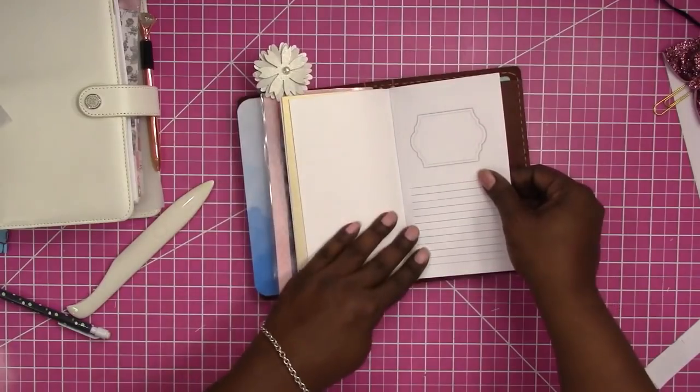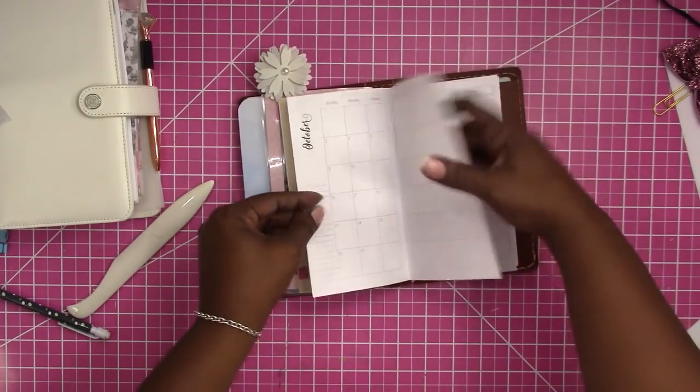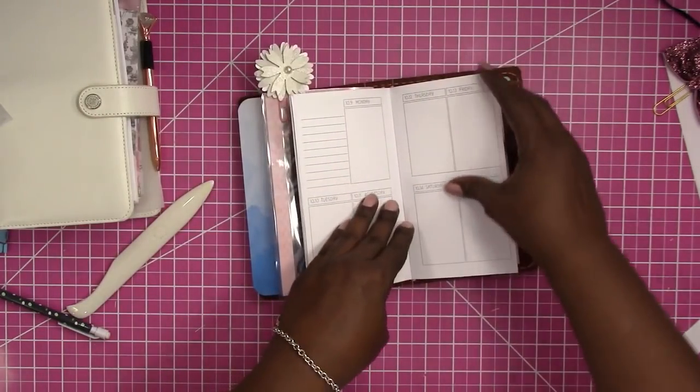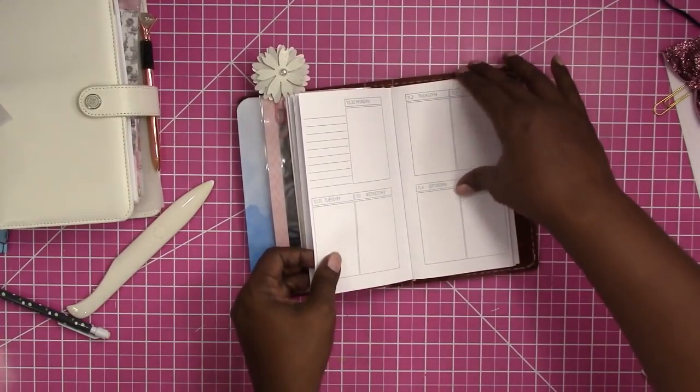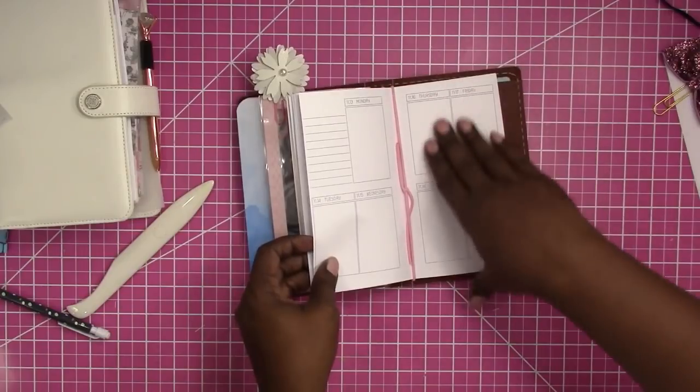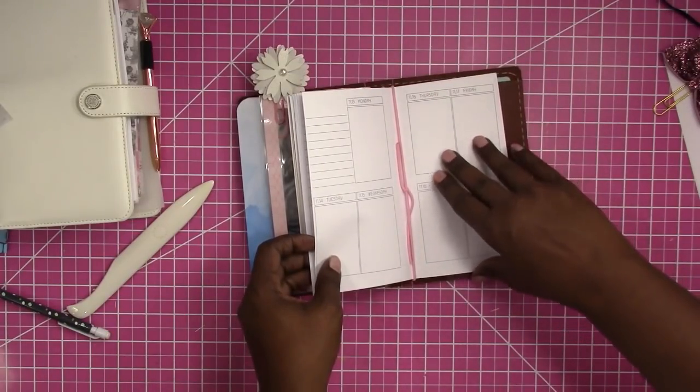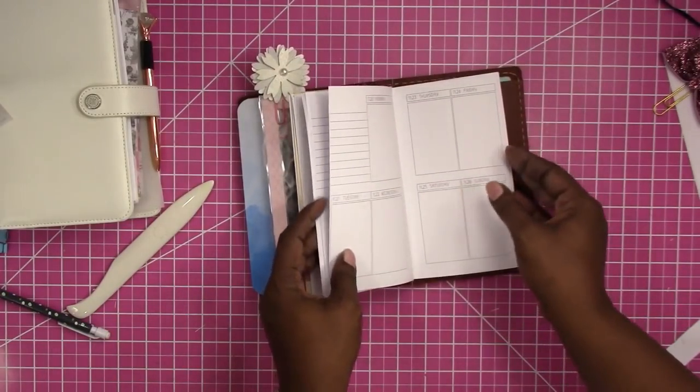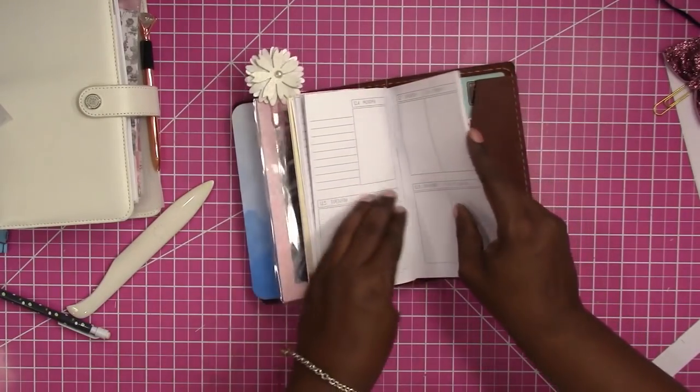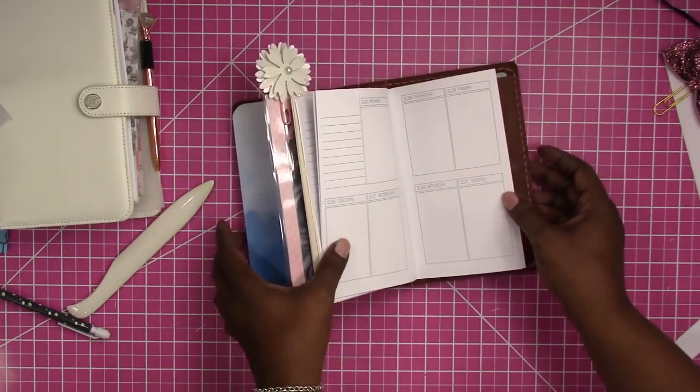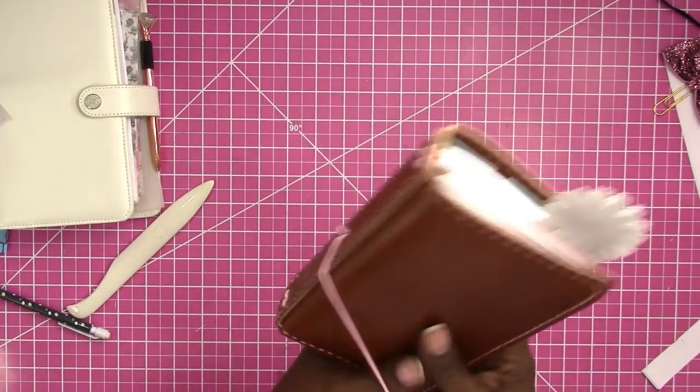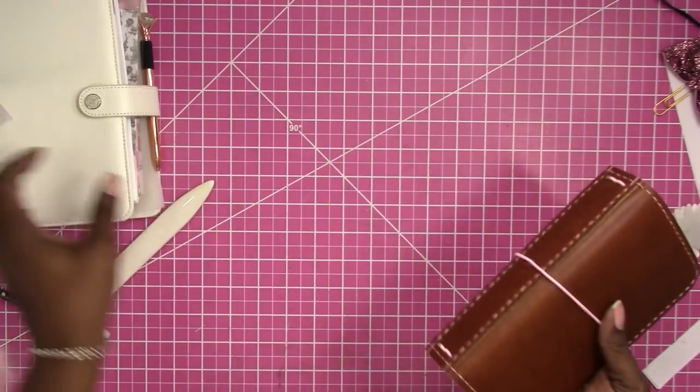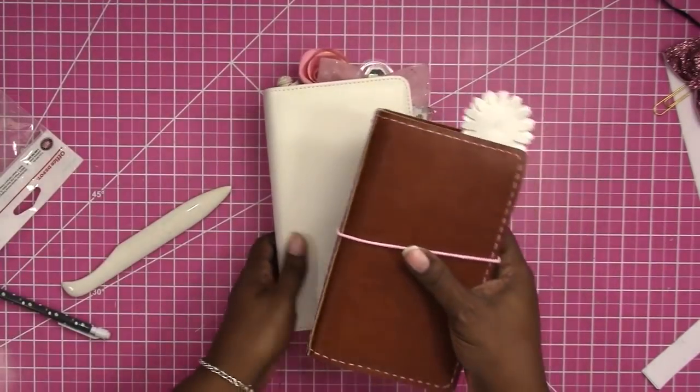And it is exactly the same as the insert in the binder. Same size, same insert. So that's how you would do it. And that is an example of how versatile personal inserts can be as well as printable. If you get your own printable inserts and print them and cut them yourself, you can pretty much use them how you want.